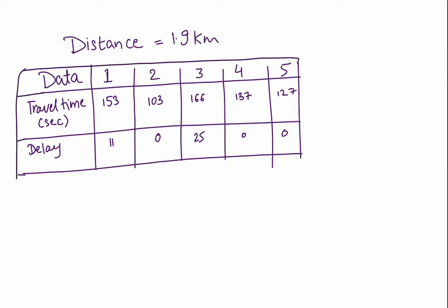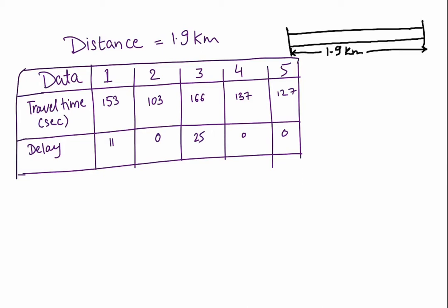Now let us understand each with an example. Suppose we are doing a trial run on a road section of 1.9 kilometers. In the first trial, travel time was 153 seconds with an 11-second delay. In the second trial, travel time was 103 seconds with no delay. In the third trial, travel time was 166 seconds with a 25-second delay. In the fourth trial it was 137 seconds, and in the fifth it was 127 seconds. We will calculate the time mean speed, space mean speed, and running speed.